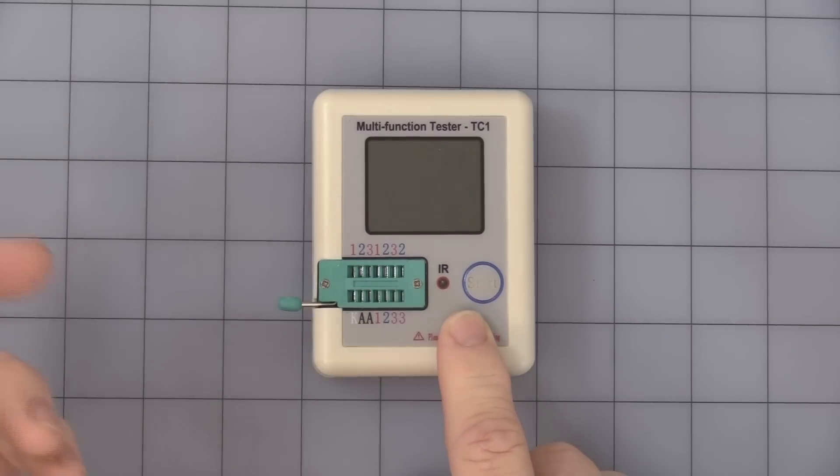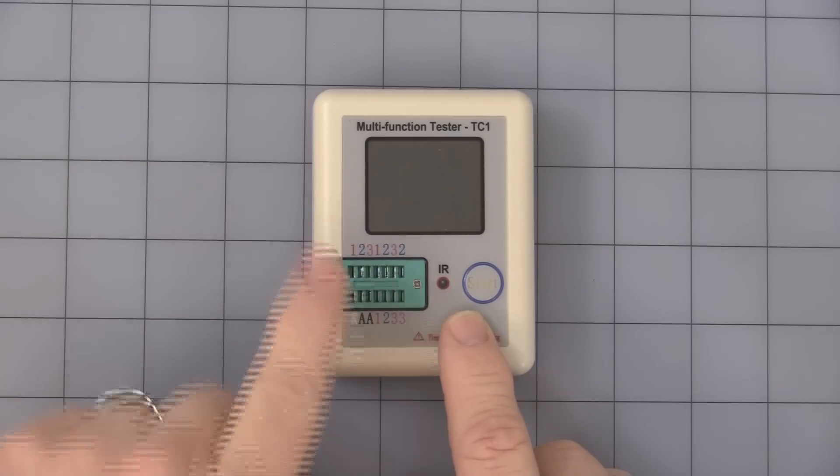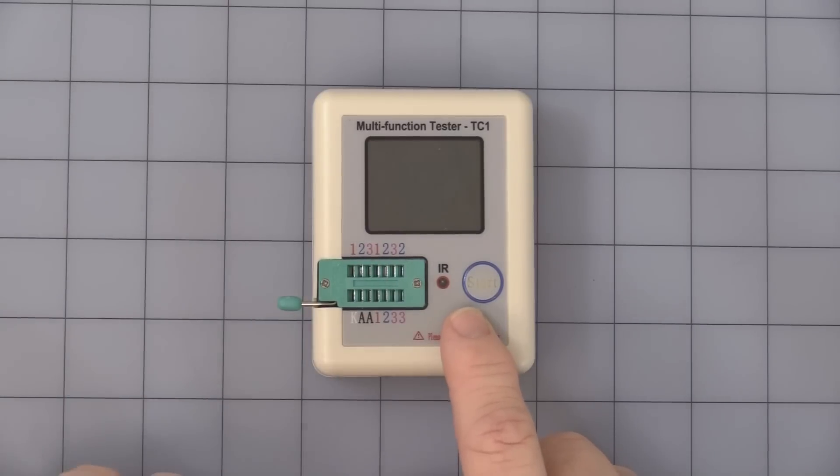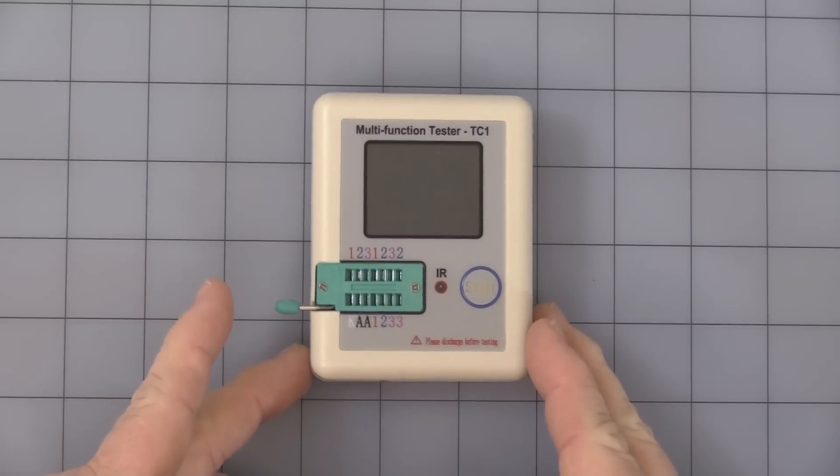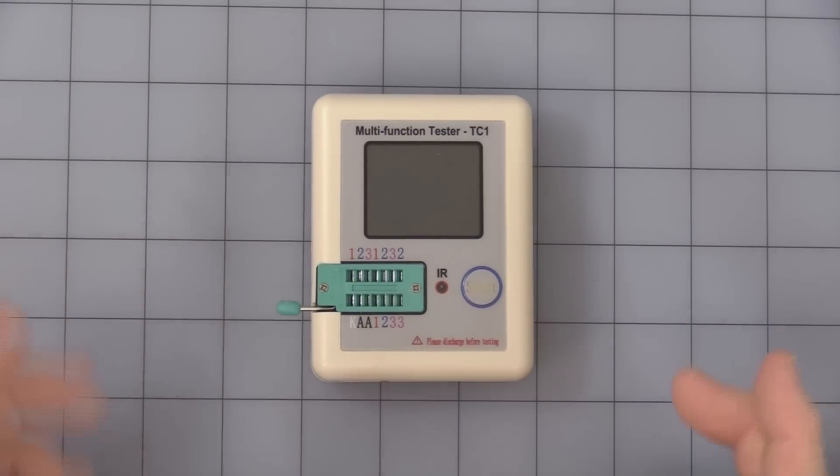All the ones are tied together, all the twos are tied together, all the threes are tied together. It's just different spacing for different components. So if you're using a two leaded device, you would have to make sure you're between one and two or two and three. You cannot stick a single device into a one socket and a one socket and have it measured. You must use different numbers.